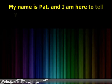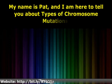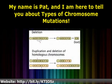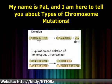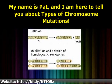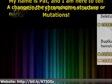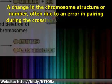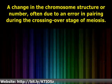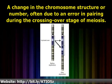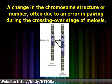Hello, my name is Pat, and I am here to tell you about types of chromosome mutations. A change in the chromosome structure or number, often due to an error in pairing during the crossing over stage of meiosis.